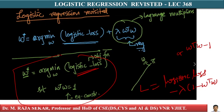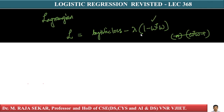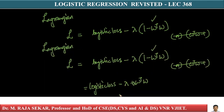We choose (one minus w-transpose-w). Let me expand this equation: the Lagrangian equals logistic loss minus lambda times one minus lambda times negative, giving us plus lambda times w-transpose-w. So the Lagrangian is: logistic loss minus lambda plus lambda times w-transpose-w.